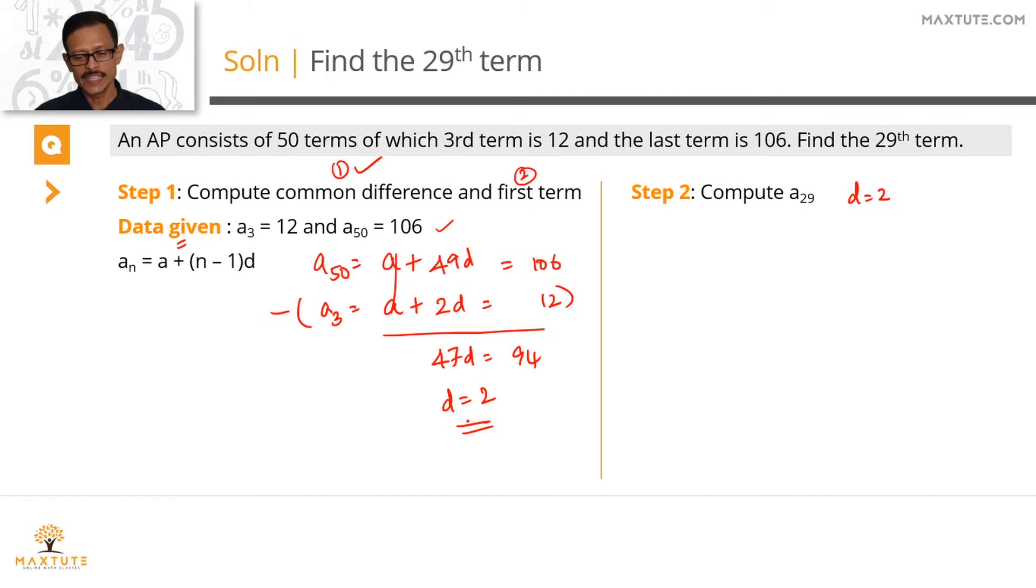Let's plug in the value of D as 2 in this equation, equation number 2. So we'll have A plus 2 times the common difference, which is 2 times 2, equals 12. 2 twos are 4. Take it to the right hand side, we get the value of the first term, A equals 8.